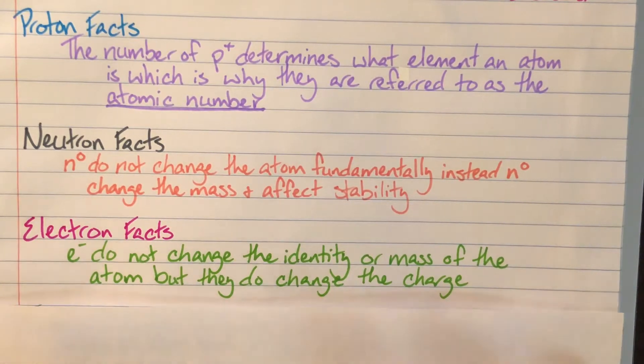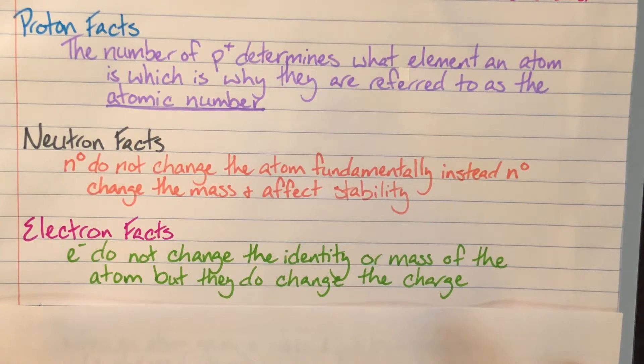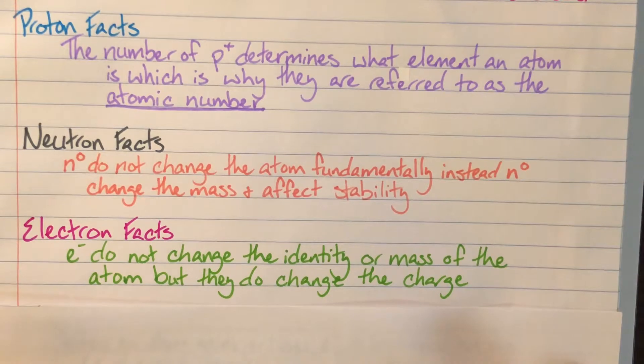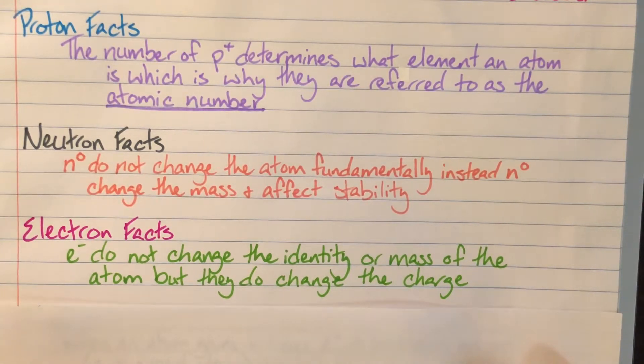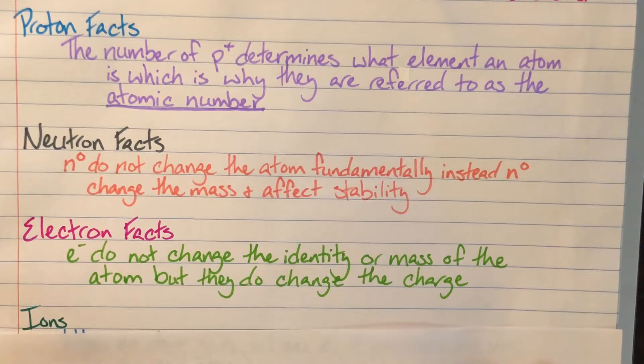I know a lot of students get that mixed up because electrons do have a negative charge. So I specifically like to use the words steal or give away because those generally have the similar connotations that we want you to have. So if an atom steals an electron or gives away an electron, it will become something called an ion.